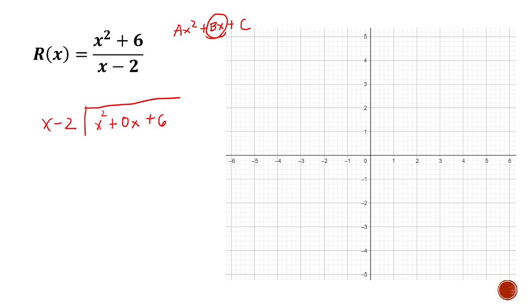x squared divided by x, that is x. We multiply x to the divisor. x times x is x squared, x times negative 2 is negative 2x. We subtract. We bring down 6. And 2x divided by x, that's 2. 2 times x is 2x, 2 times negative 2 is negative 4. We subtract. That is 0, and positive 6 minus negative 4 is 10. We get what's in here. Don't worry about the remainder, just get this.